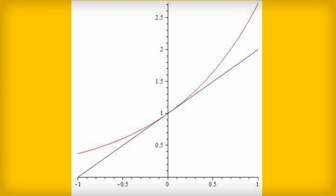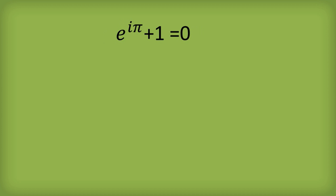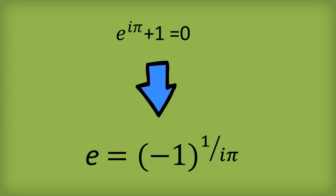So E is everywhere, even in American cartoons. Many people will have seen the equation using the complex number i. That means E is equal to negative 1 to the power of 1 divided by i times pi. This is not the complete story about E and i — have a look at the extra information PDF if you want to see more.